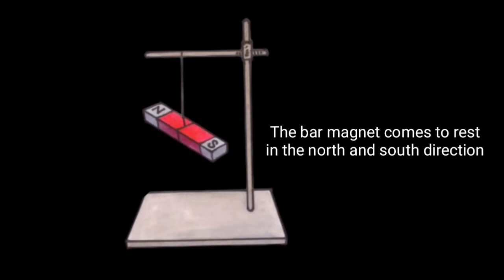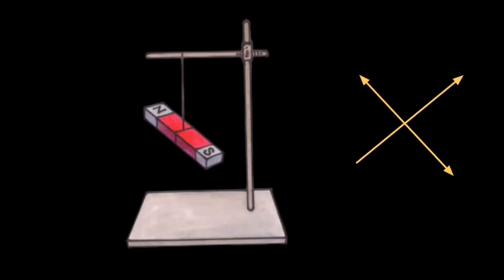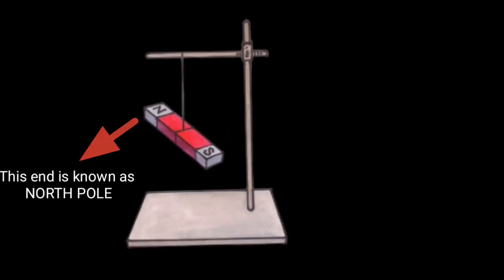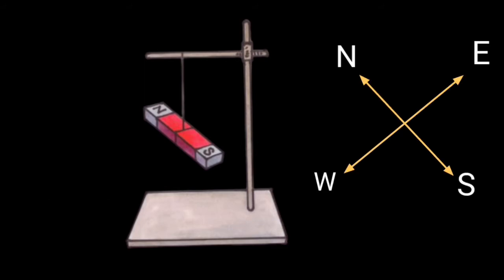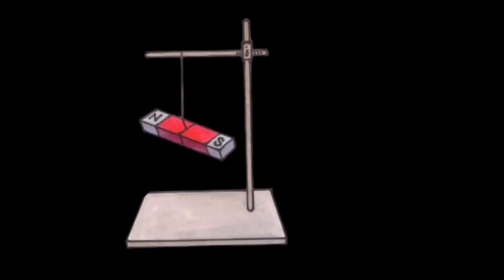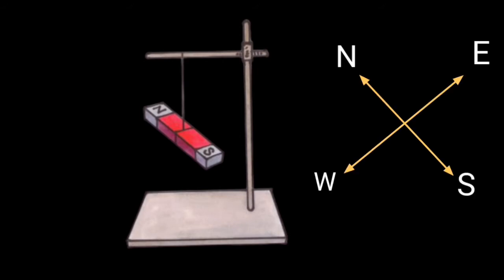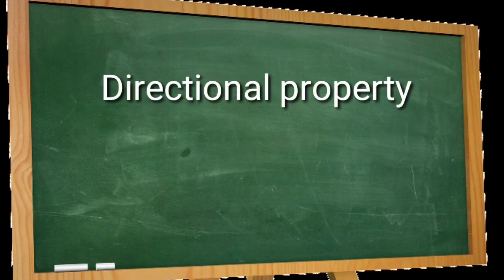Observation: You will observe the bar magnet comes to rest in the north and south direction. Conclusion: The magnet always comes to rest in the north-south direction; in each case the marked end points towards north. This end is known as the north pole of the magnet, and the other end which points towards south is known as the south pole of the magnet. This property of magnets is called the directional property.